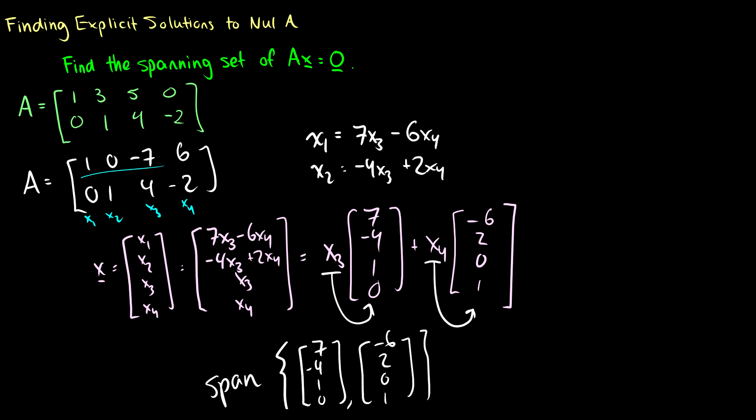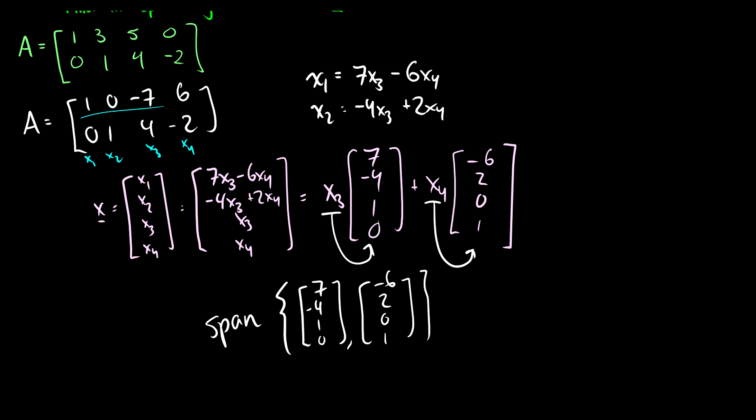These are the explicit solutions to the null space. If we want any vector u such that Au = 0, we can pick any linear combination of these two vectors and we'll produce the zero vector. Next time we'll talk about the column space. If you have any questions, please leave them in the comments below.